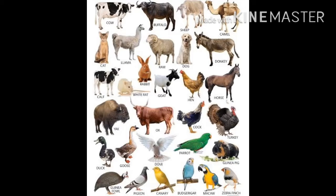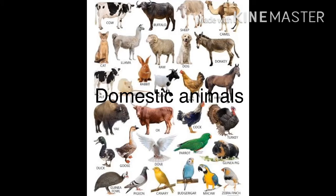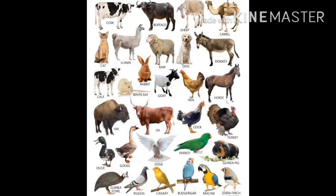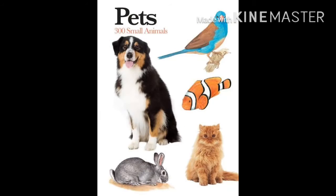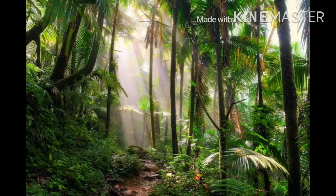Some animals live close to our homes and are quite useful to us. Such animals are known as domestic animals. We also keep some animals at home as pets, such as dog, cat, rabbit, fish, and bird.